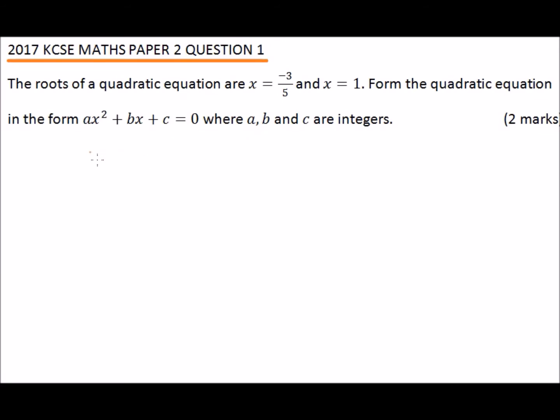Now, if you are given x equals minus 3 over 5 and x equals 1, it means the factors that give these roots are x plus 3 over 5, close the bracket, and x minus 1 equals 0.